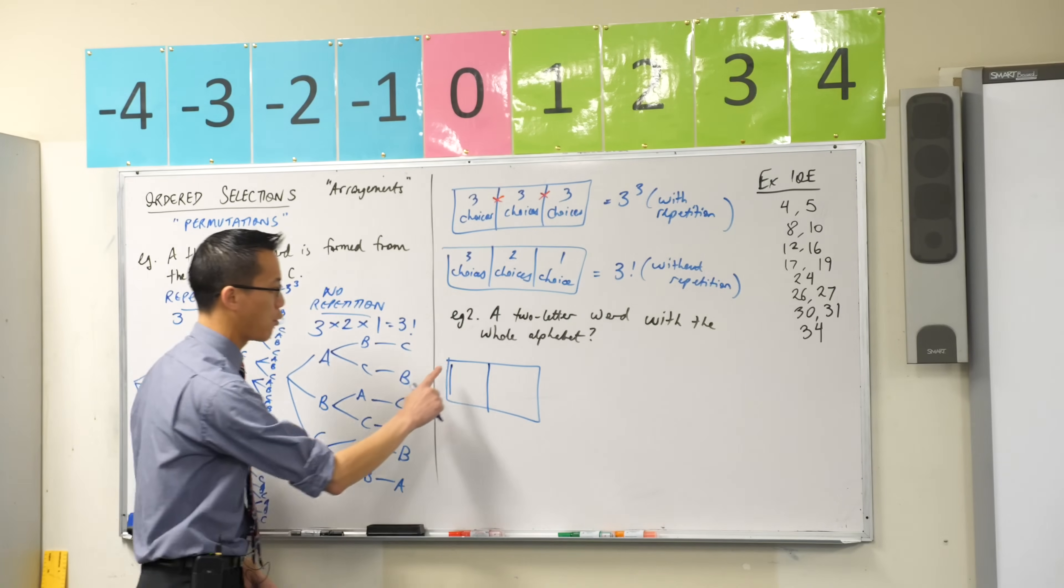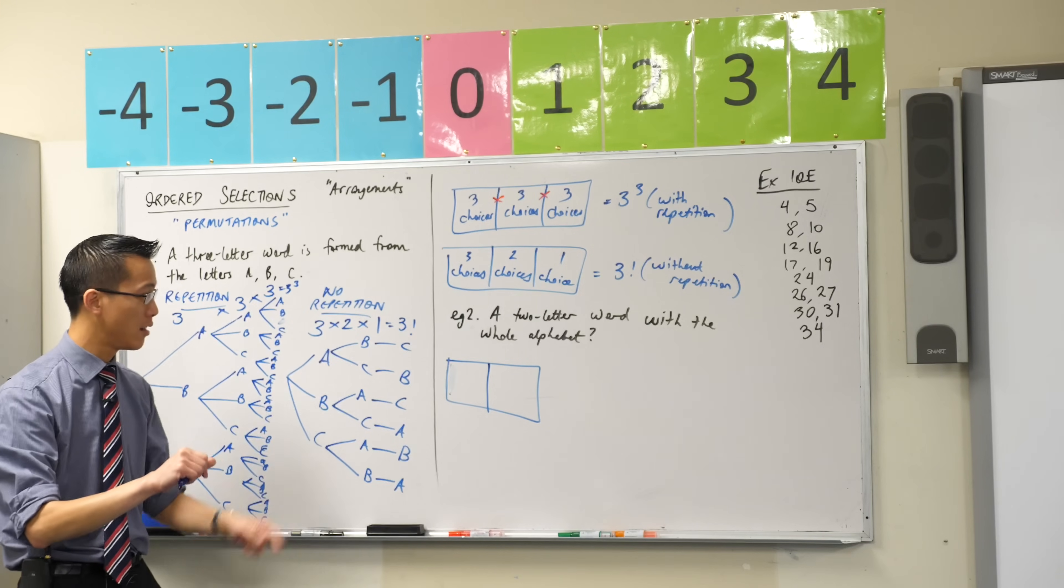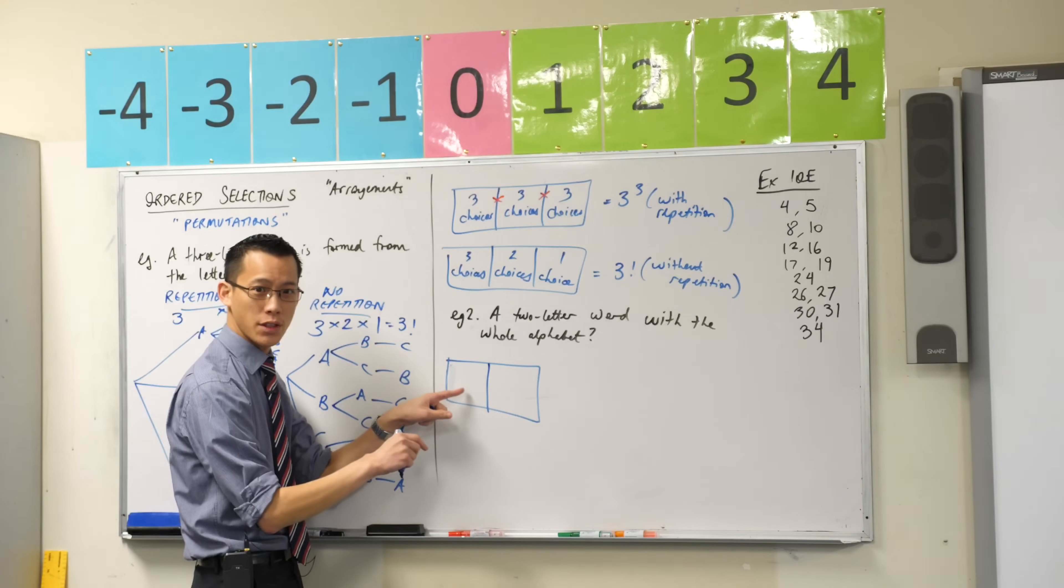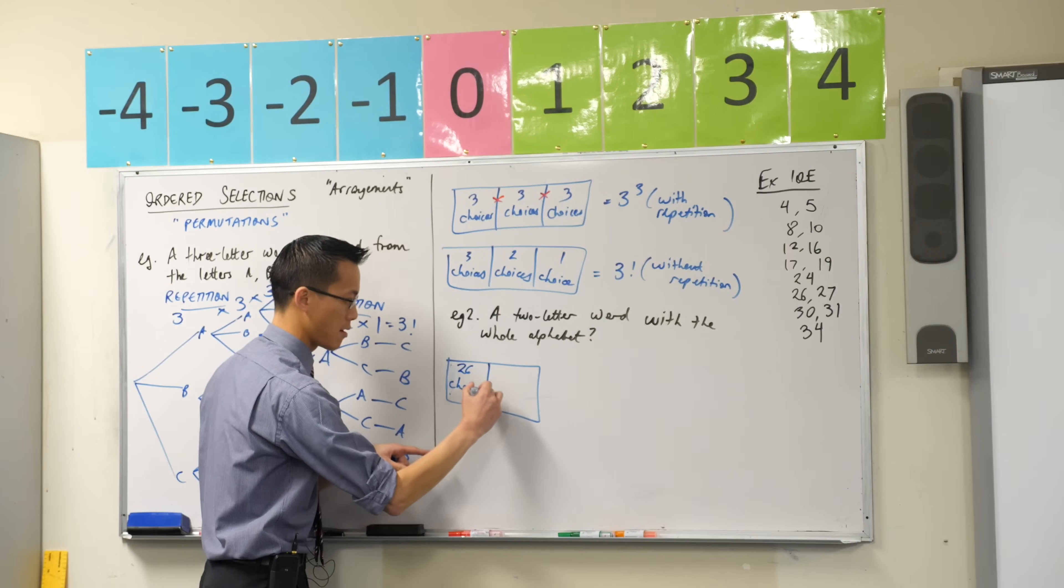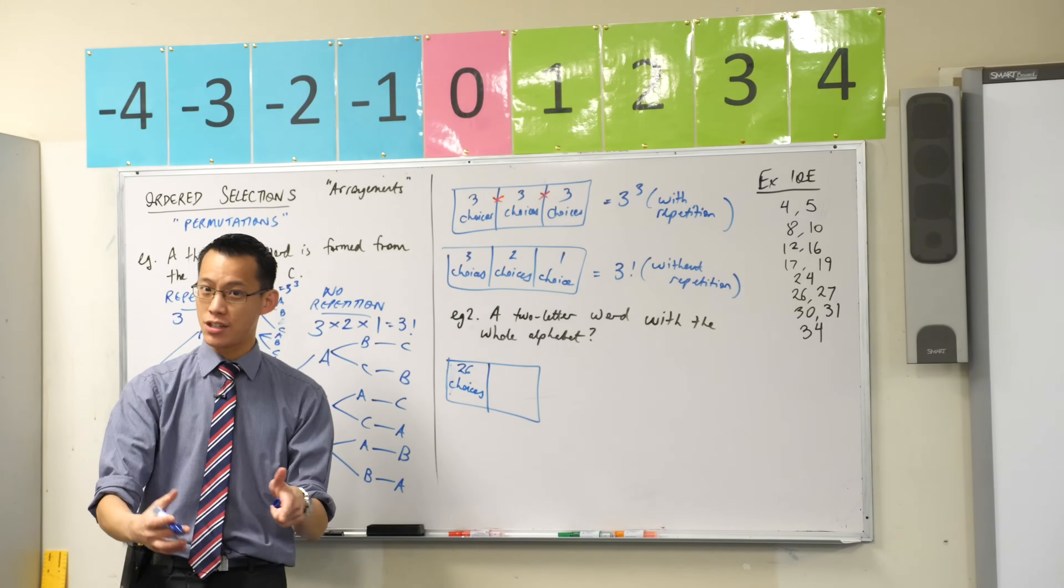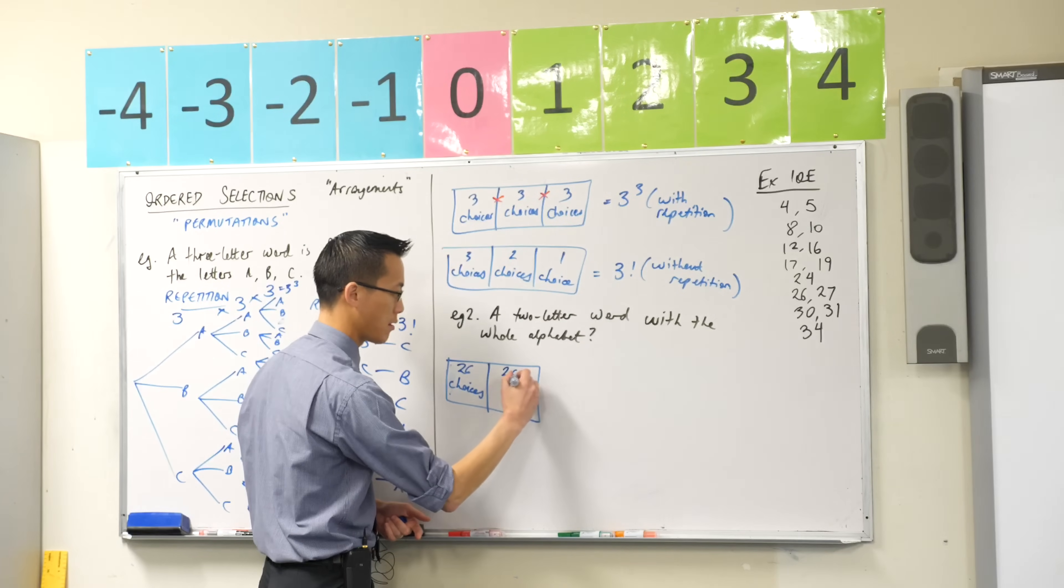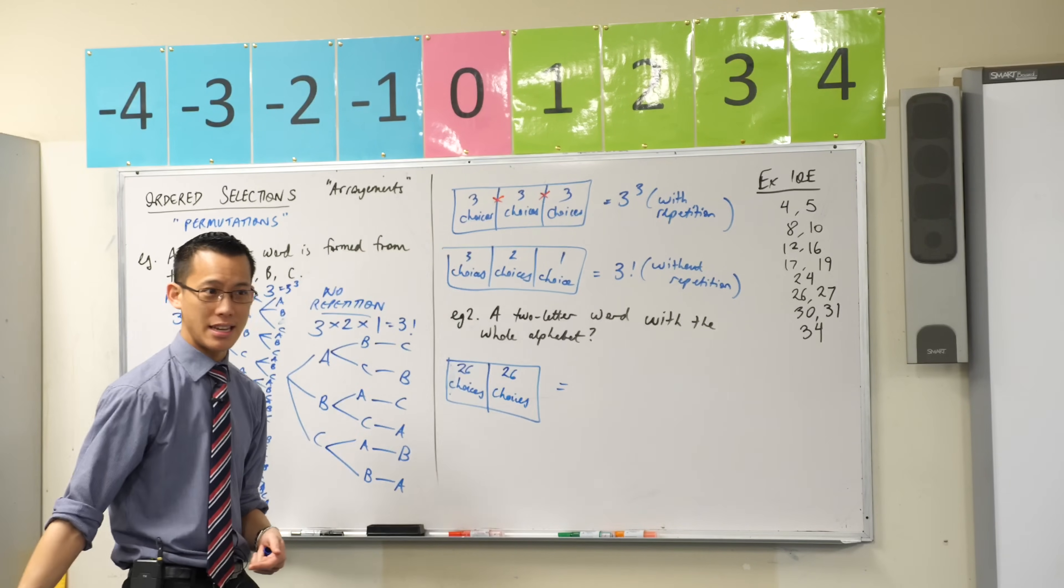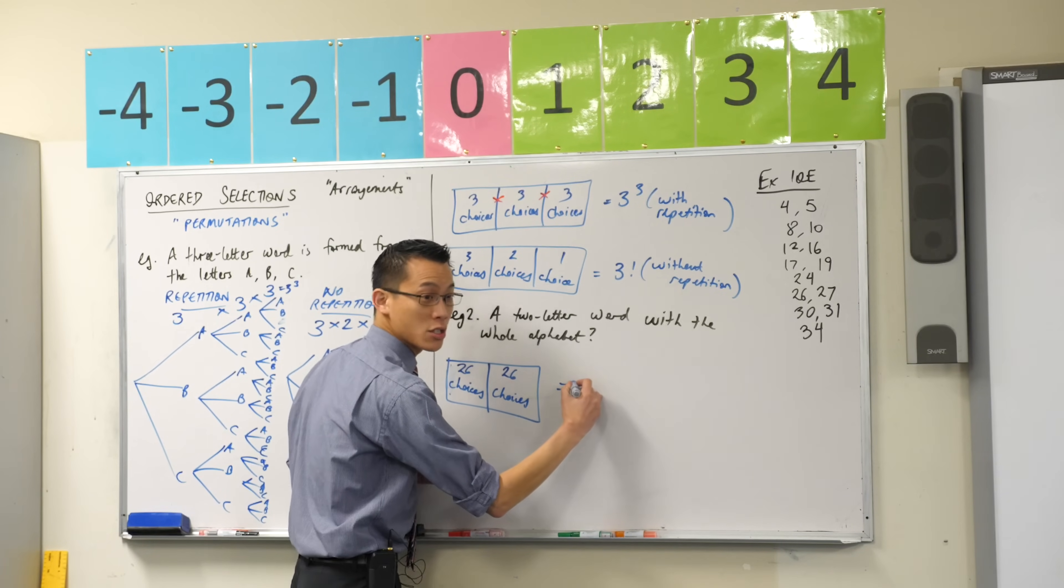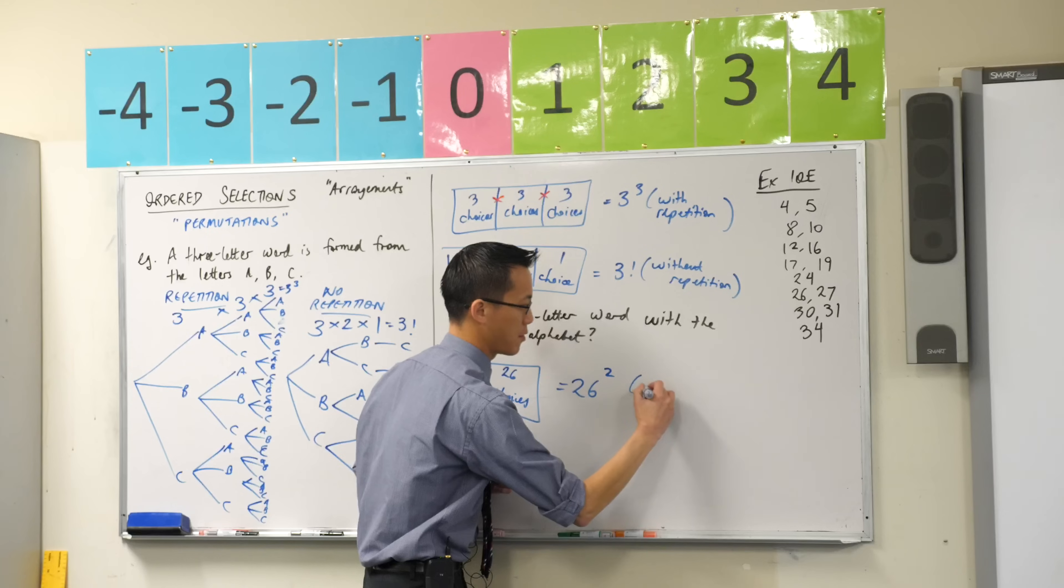Now, let's do it for both. If we've got repetition allowed, I will have how many choices for the first letter? 26 choices. And here I'm allowing repetition. So when I go for my second letter, it's still 26. So what's this going to equal? Well, I'm multiplying as I go left to right. So this is 26 squared. This is with repetition.